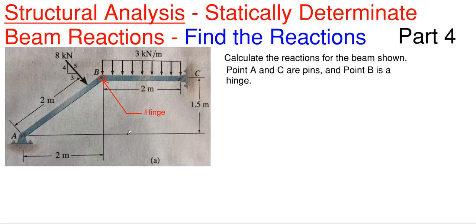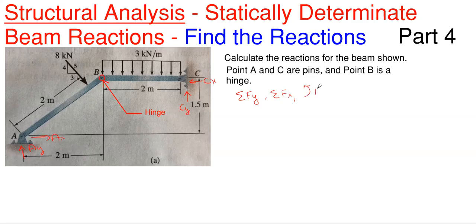When we have a hinge, we are going to have to split this problem into two. If we did not split this problem into two members and just assumed our reactions — A sub Y, A sub X for our pin, and then C sub Y and C sub X — we would have four unknowns to solve. Using our equilibrium equations of summing forces in Y, summing forces in X, and summing moments about a point, we only have three equations, so the max we can have is three unknowns. With four unknowns, there's no way we could solve this using statically determinate methods of equilibrium.